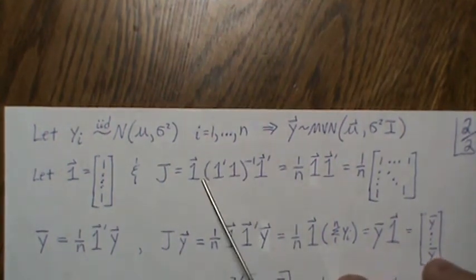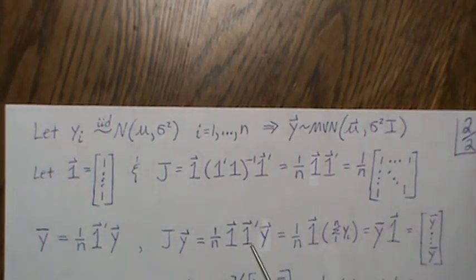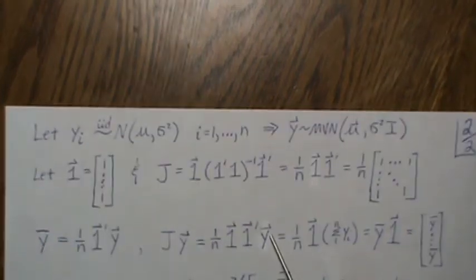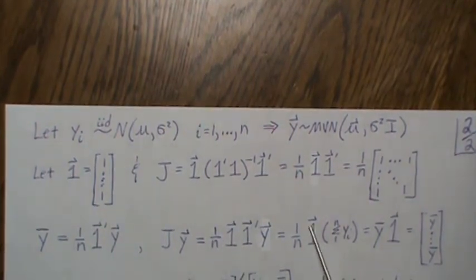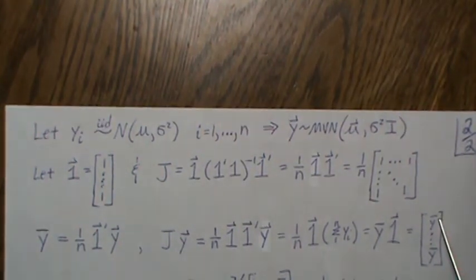Now here, J times Y, where J is this, we get this. So I'm using this form of J, and this is Y. Now this here, the 1 transpose Y, that creates the sum of the Ys. It's a constant, so it can be taken out front, divided by n, and we get Y bar. So JY is Y bar times 1, which is a constant vector of the sample mean. So it's Y bar, Y bar, Y bar, there's n of them.